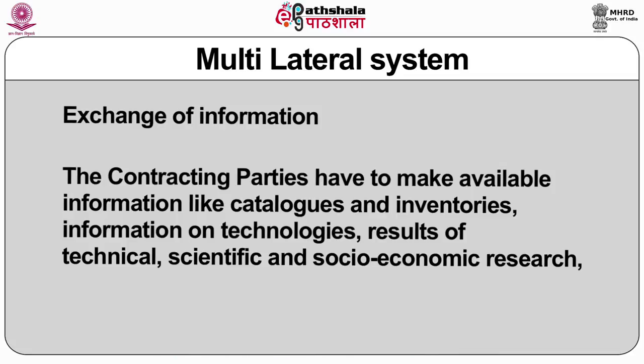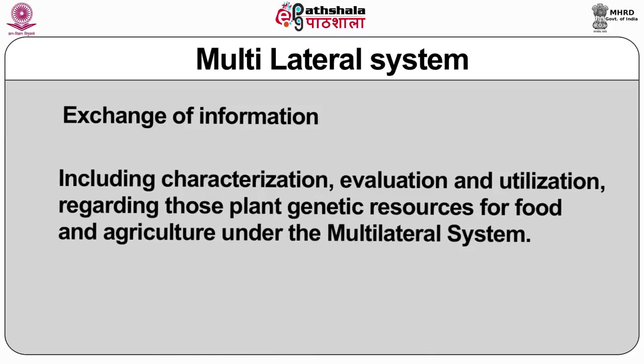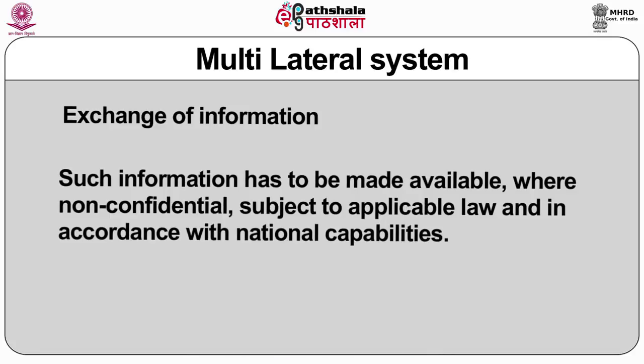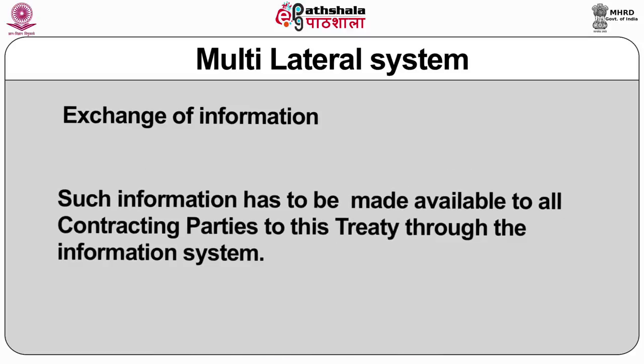The contracting parties have to make available information such as catalogues and inventories, information on technologies, results of technical, scientific and socio-economic research, including characterization, evaluation and utilization regarding those plant genetic resources for food and agriculture under the multilateral system. Such information has to be made available where non-confidential, subject to applicable law and in accordance with national capabilities, to all contracting parties through the information system.